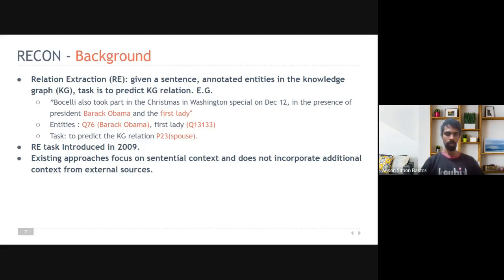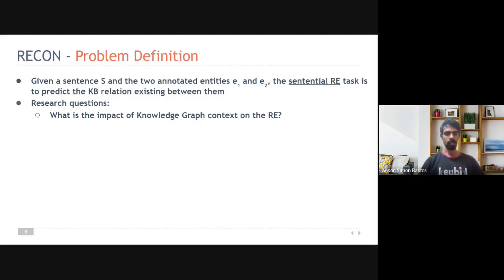To add another point, there are two variants in the RE task. One is the multi-instance setting, where we consider multiple bag of sentences in addition to the given sentence, and the sentential context. Sentential RE task, where we consider only the given sentence, and ignore any other sentences present in the document. The definition of a sentential RE task is very similar to that of the standard RE task, except that we would not use any other bag of sentences in the document. And only the sentence under consideration, along with the annotated entities, are used to predict the relation.